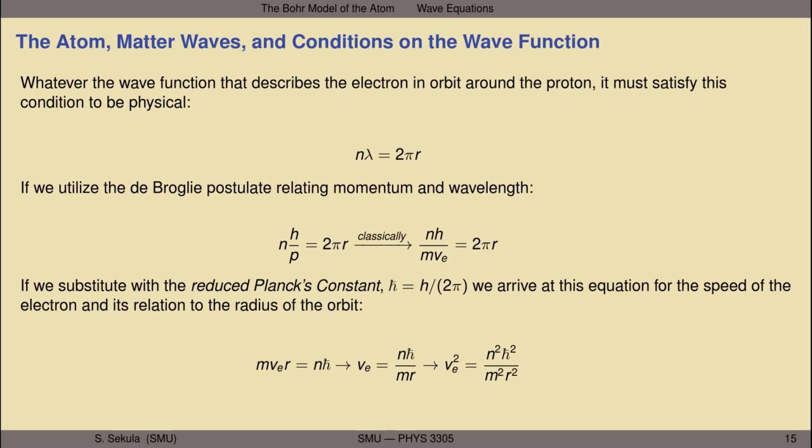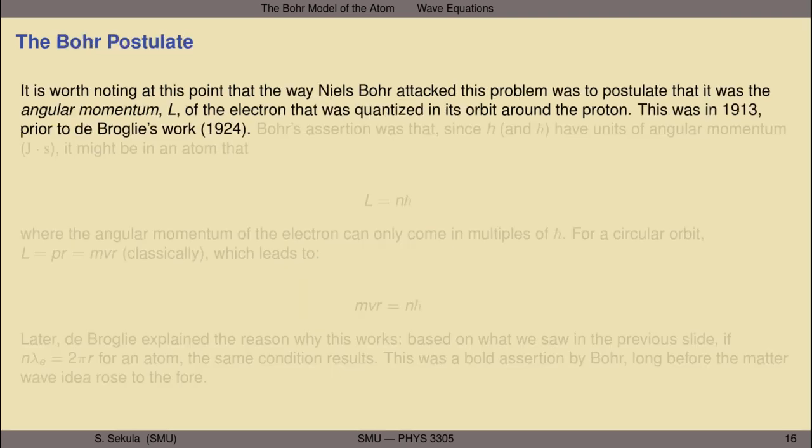From the matter wave hypothesis, I have a relationship between v, an integer multiple of the fundamental wavelength, and the radius of the orbit that determined that wavelength. Since v and r also appear in kinetic energy, we have a new constraint to throw into energy equations that will lead us to an understanding of why it is that the atomic spectrum is discretized.